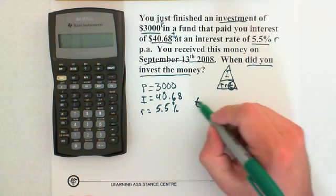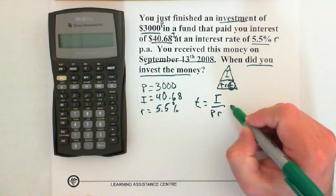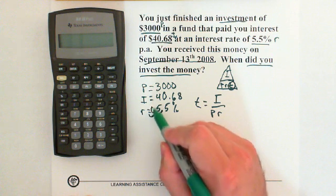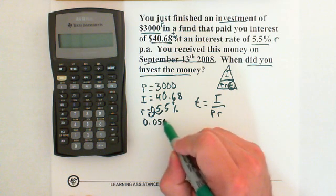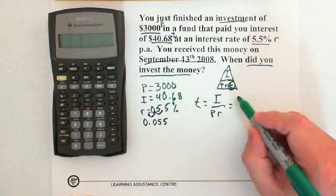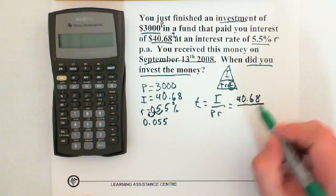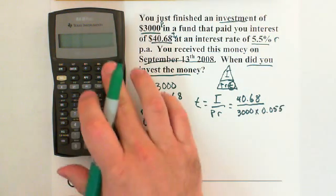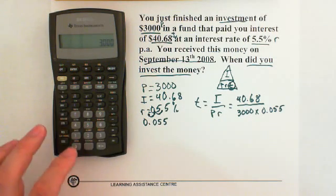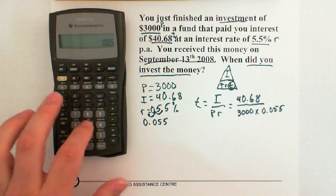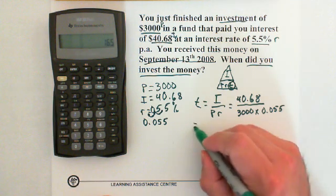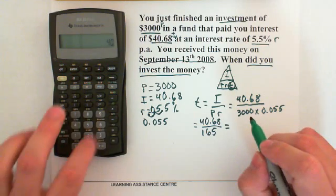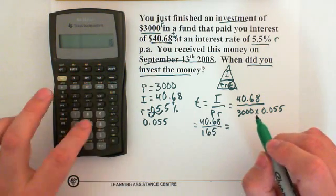So then our formula for T is I divided by PR. Now we should change the rate into a decimal, so we'll move the decimal place two places to the left and make it 0.055. So then we're going to divide $40.68 by 3,000 times 0.055. We're going to figure out the bottom first, so 3,000 times 0.055 equals, so then we've got $40.68 divided by 165. So then 40.68 divided by 165 equals.